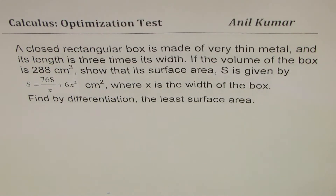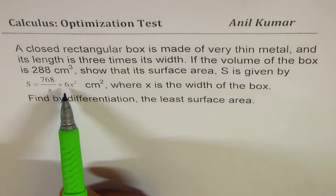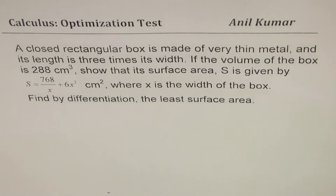I'm Anil Kumar sharing with you the solution of a question from my subscriber Brian, and let me thank all the viewers and subscribers who have been writing excellent questions and comments. The question here is: a closed rectangular box is made of very thin metal and its length is three times its width. If the volume of the box is 288 cm³, show that its surface area S is given by S = 768/x + 6x² cm², where x is the width of the box. Find by differentiation the least surface area.